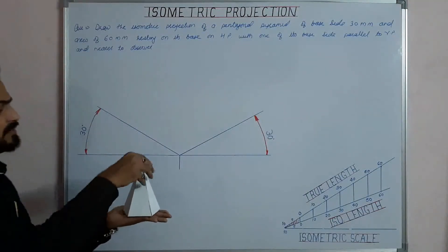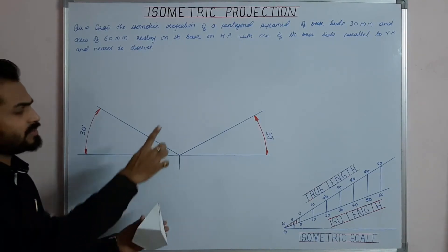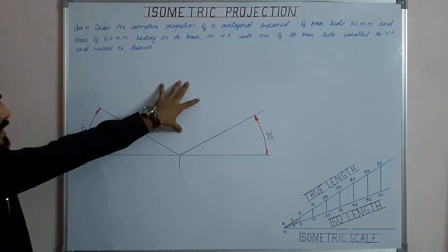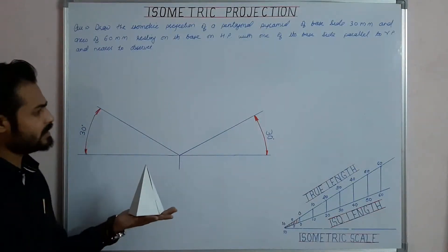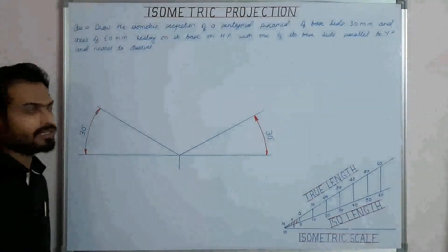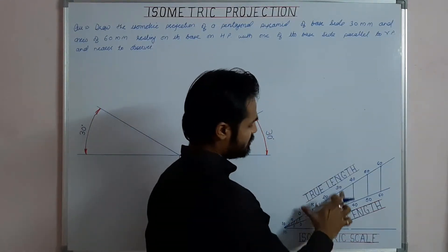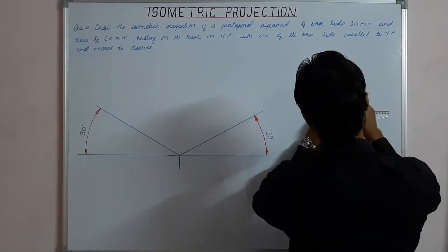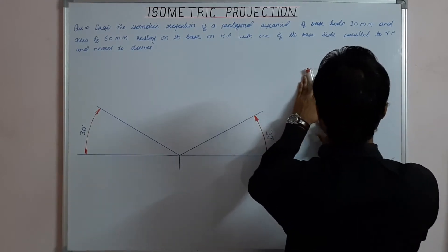For construction, we have to start from the base. We project the pentagonal base first along the iso-horizontal plane, then mark the apex and join all the generators. First, we draw the helping figure of the base — a regular pentagon of size 30 mm — but here we take iso-30, the isometric length corresponding to 30 mm, for constructing the helping figure.